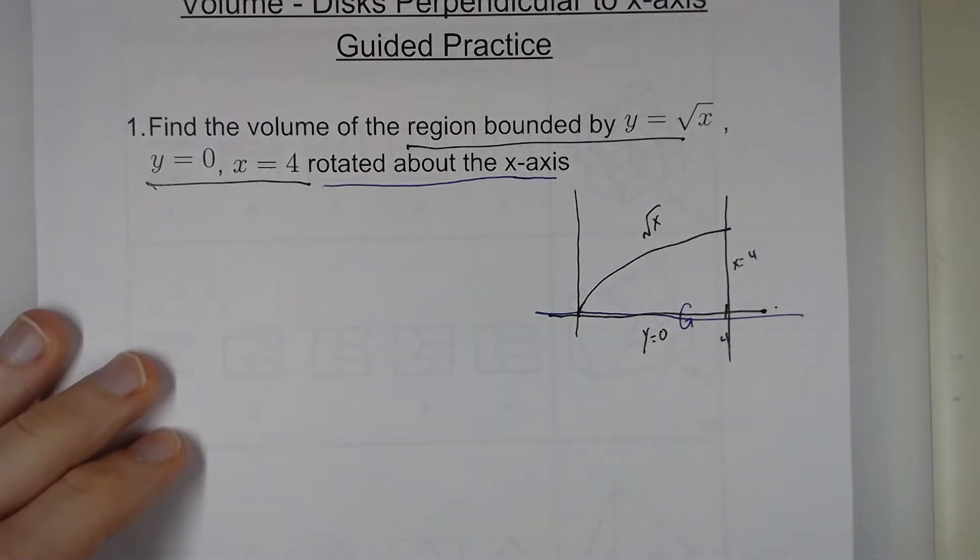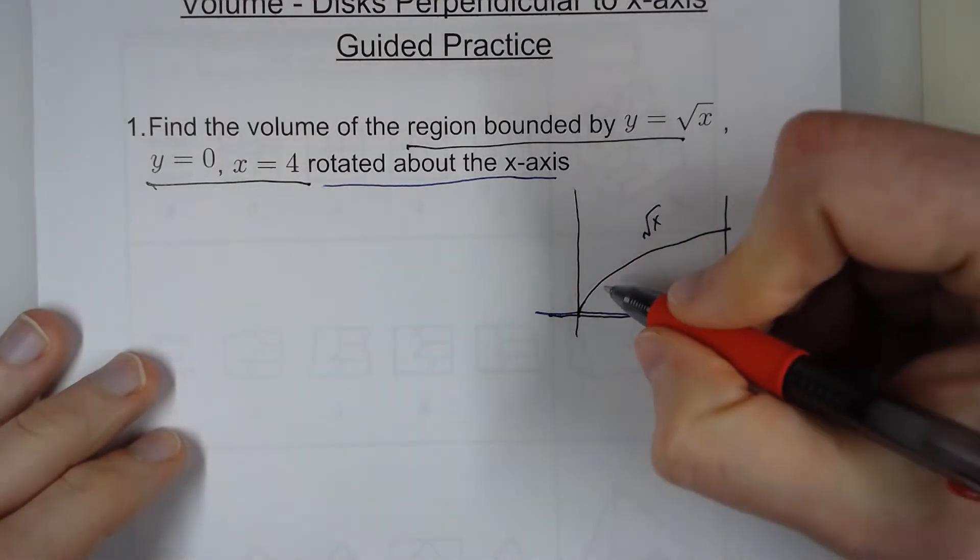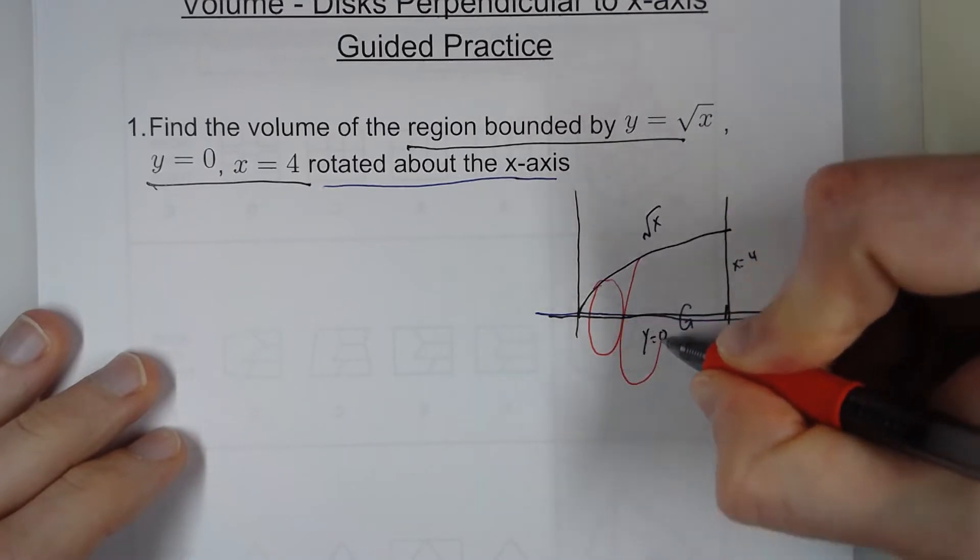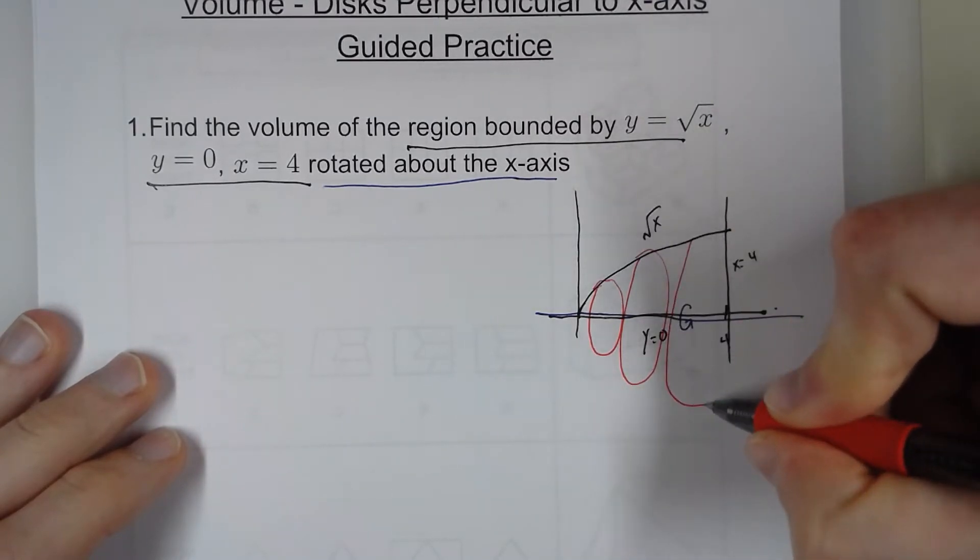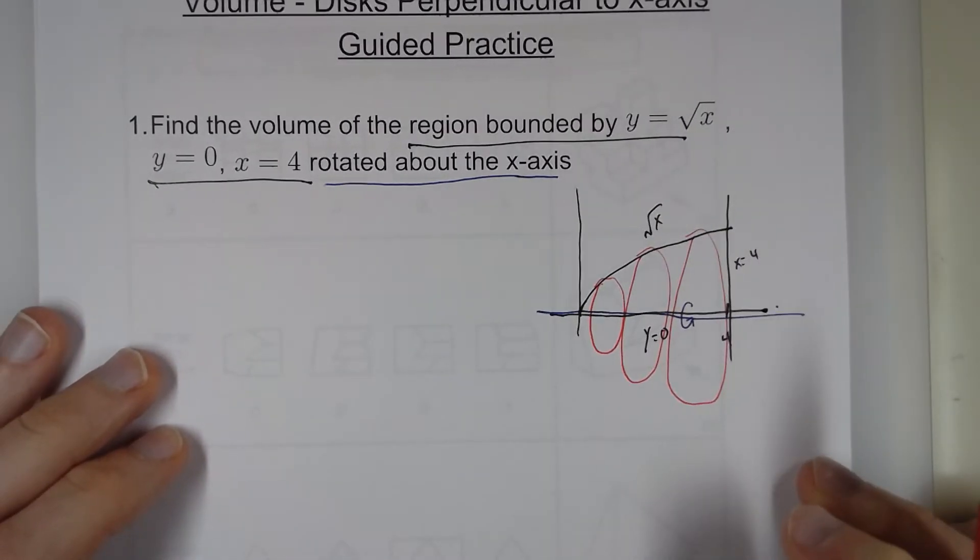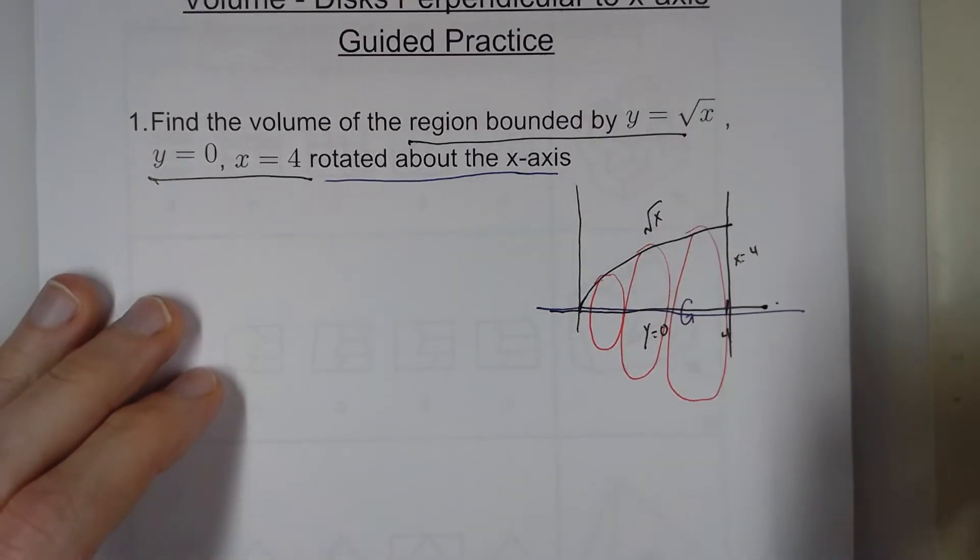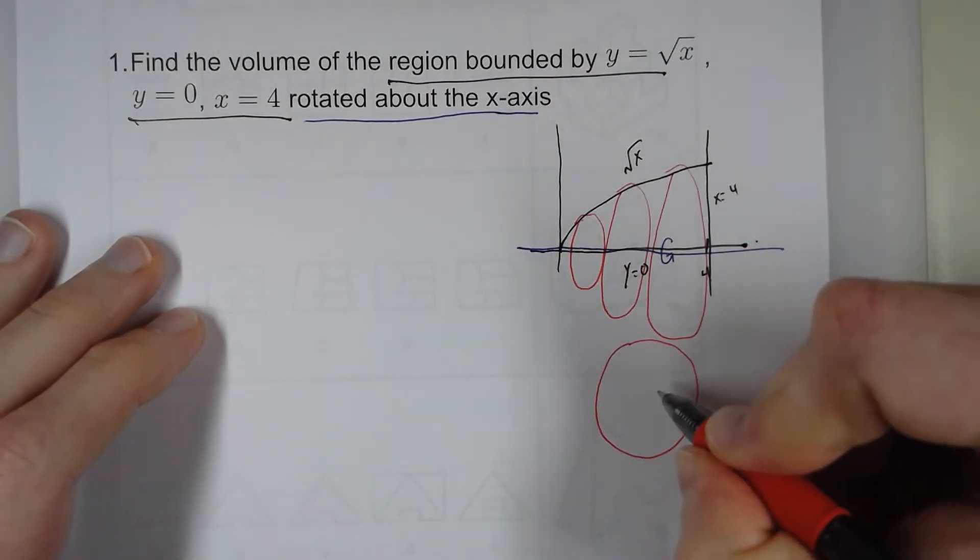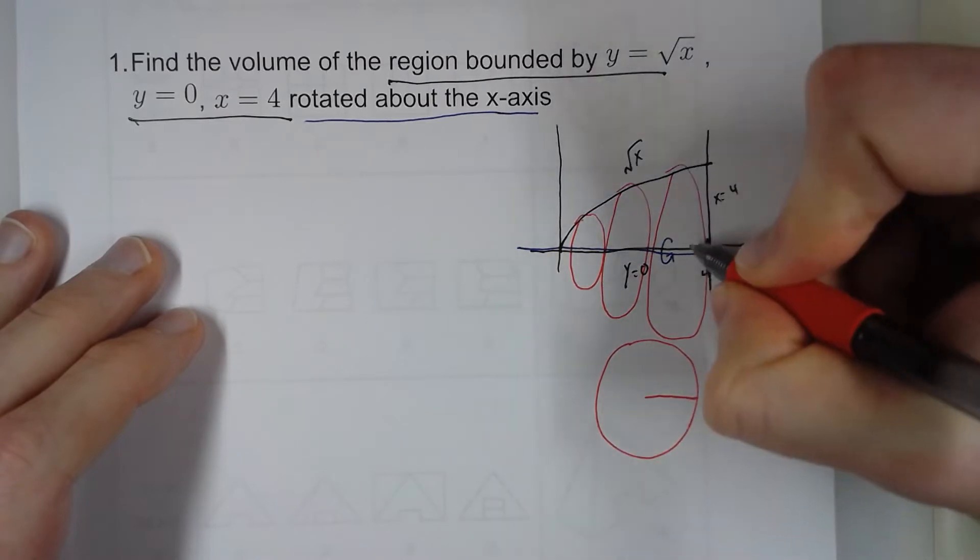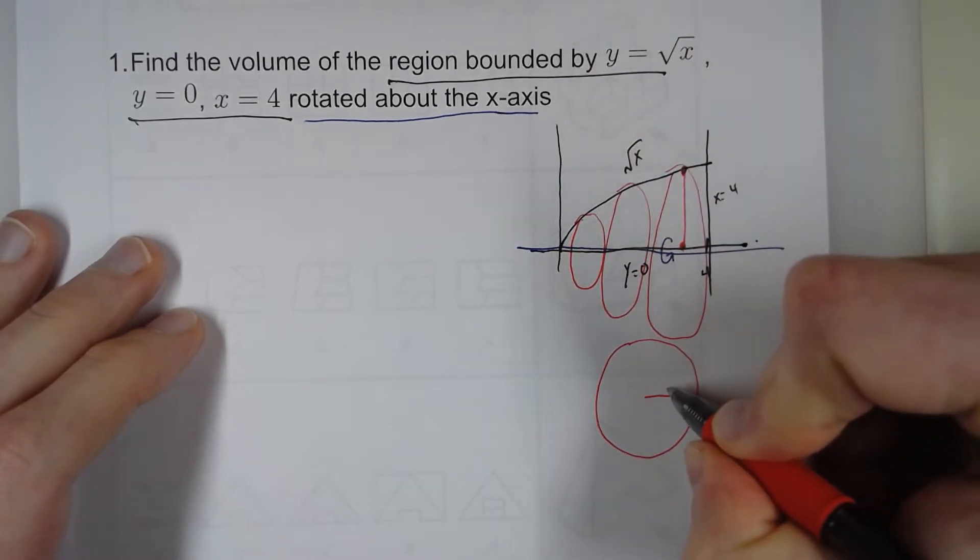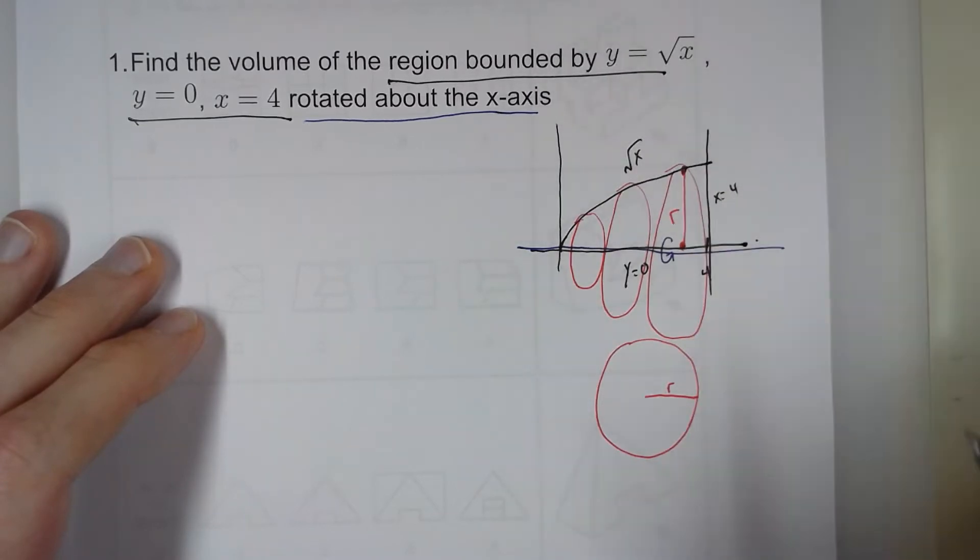So if you want to think about it, basically what's going to happen is that this is going to rotate around like this. And then the further out it goes, the bigger rotation it is. So what these are is that each cross-section is going to be a circle. And this right here, from here to here, is the radius of that circle.